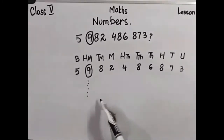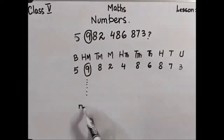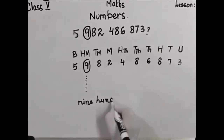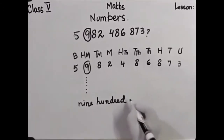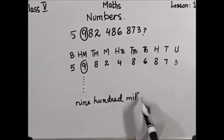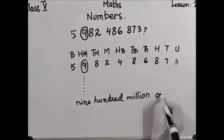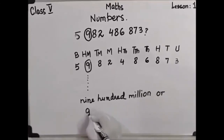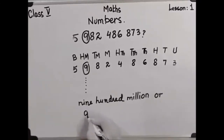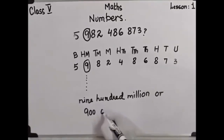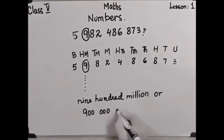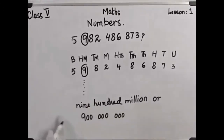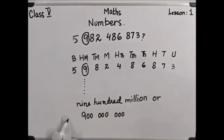Then, how do we write it? We write it like this: 9 × 100,000,000, or 9 having 8 zeros. In this way, we find and write the ring digit numbers.